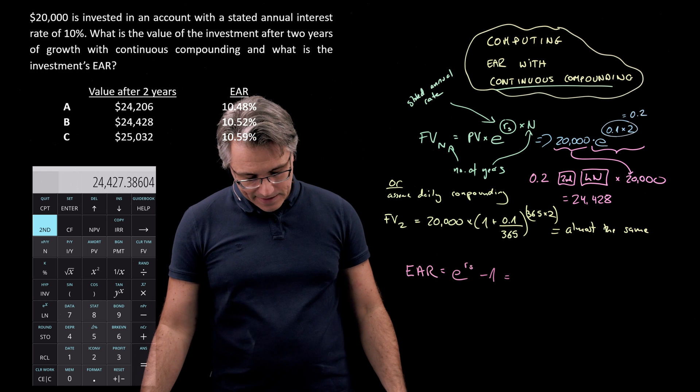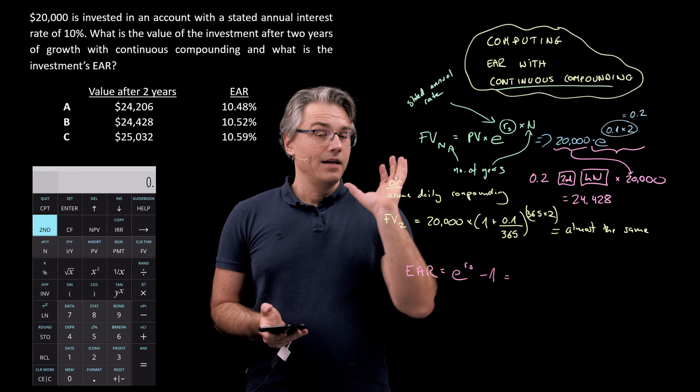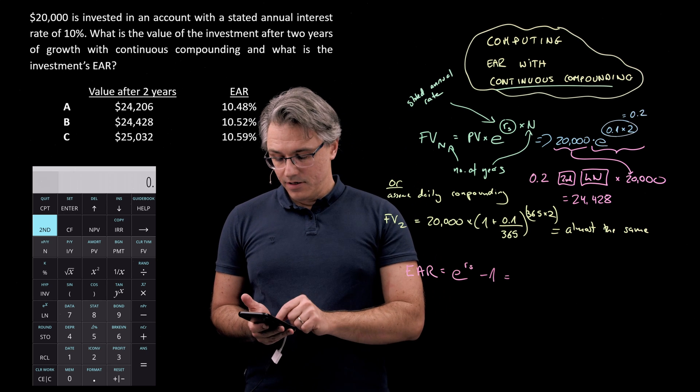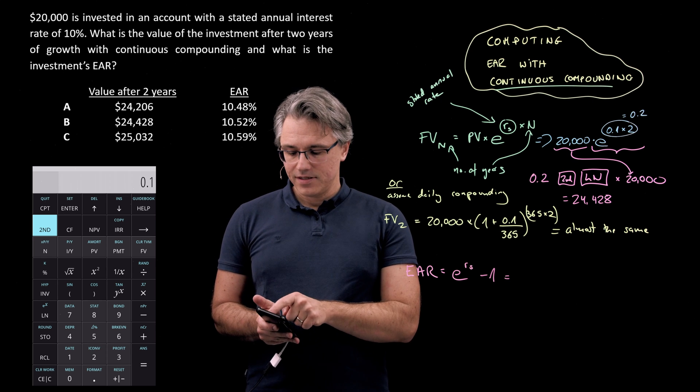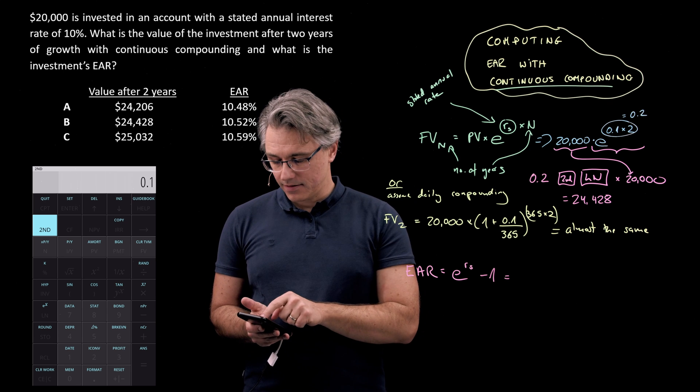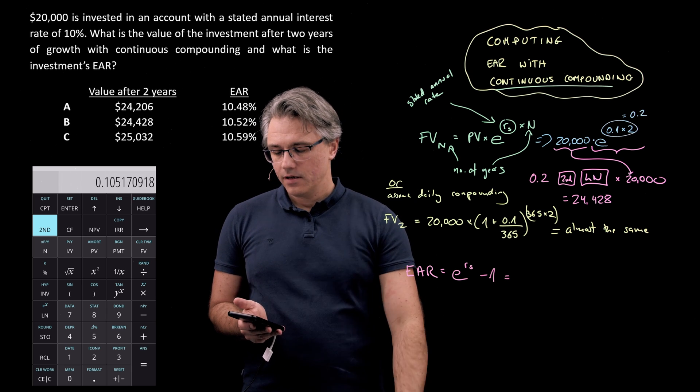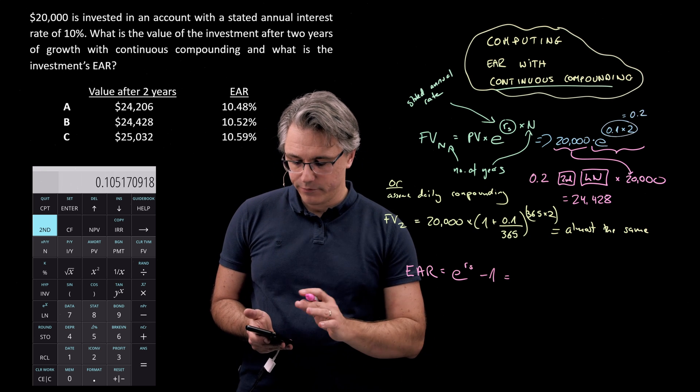So once again, in the same way as before, I'm going to first type in the annual stated rate, 0.1, that's my R_S. Now second, followed by LN, which has E to the power of X as its secondary function, minus 1. Okay. The answer seems to be 10.517.